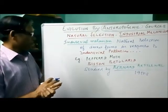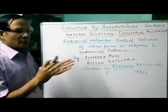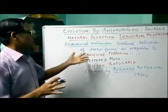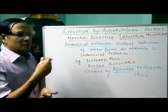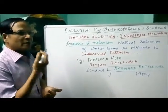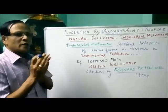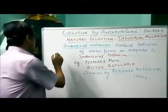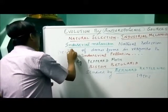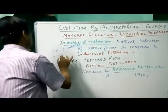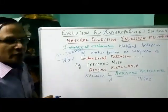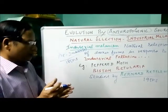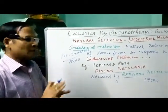Before industrialization in England, both black and light-colored (white) moths were present. During the pre-industrialization period, the background of trees and walls of buildings was white or light in color. There was no release of smoke or soot from industries, so the background was more or less white. The white moths were prevalent during this pre-industrialization period around the 1850s.